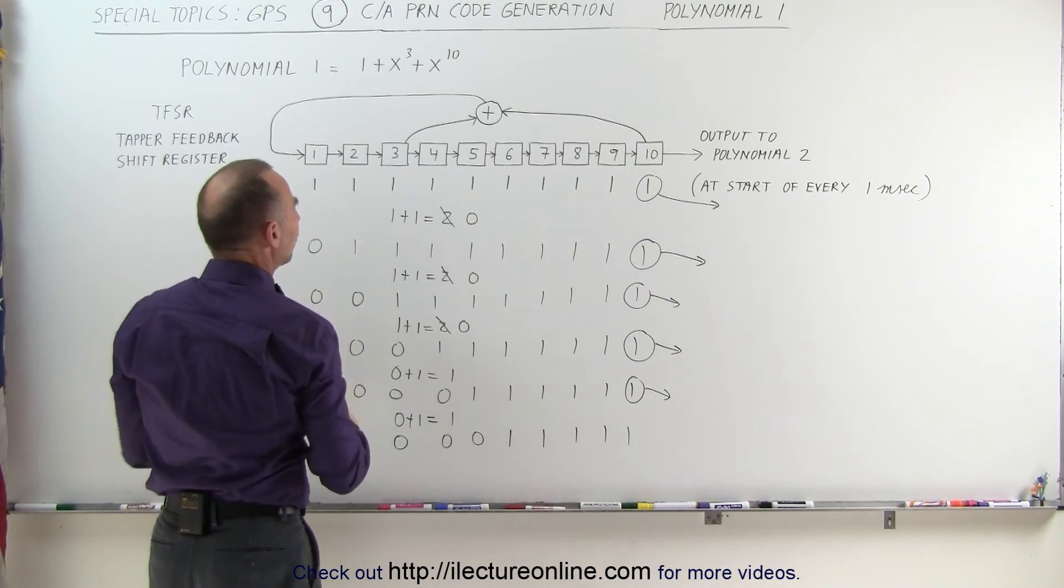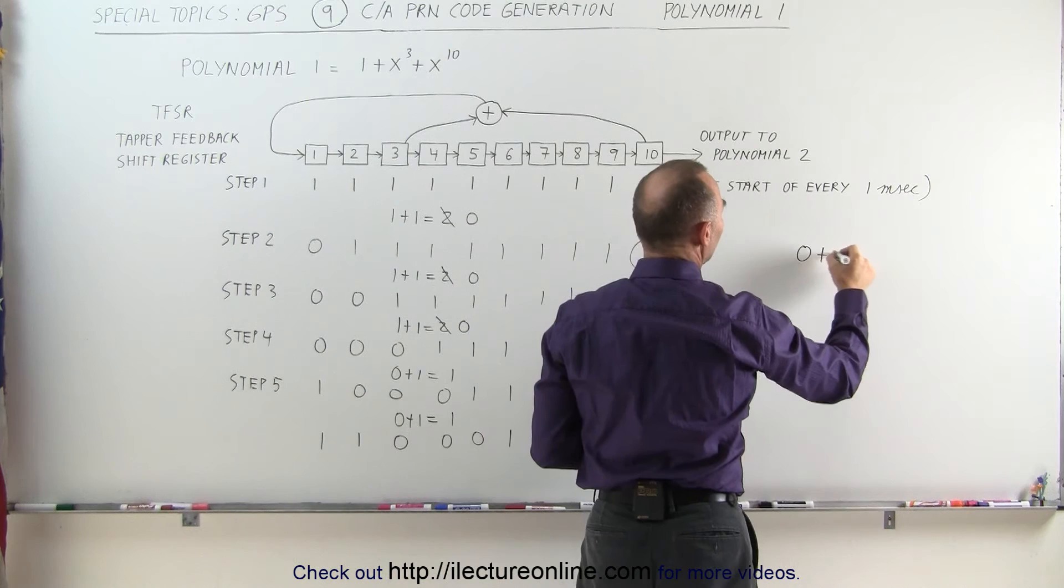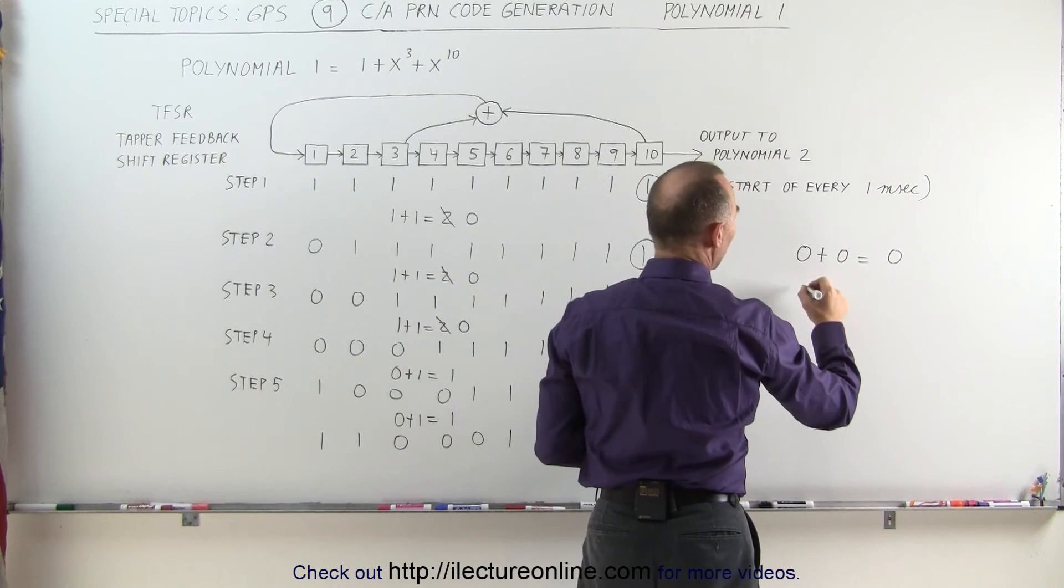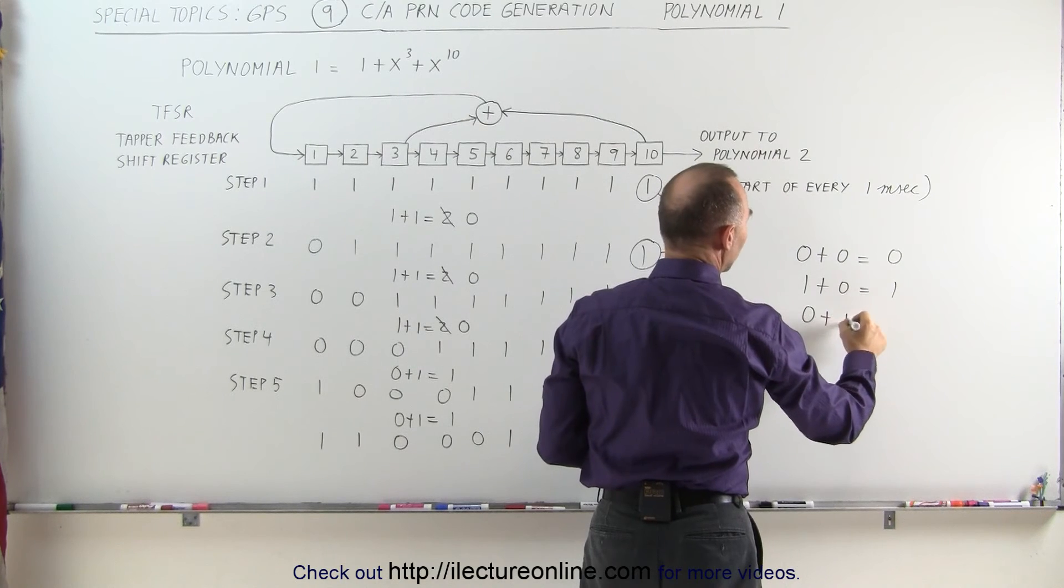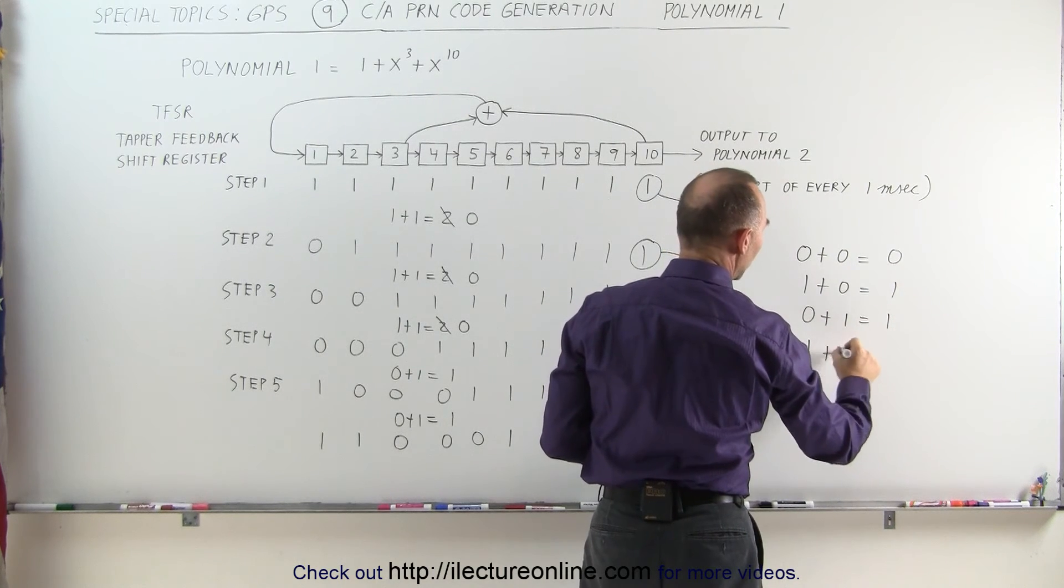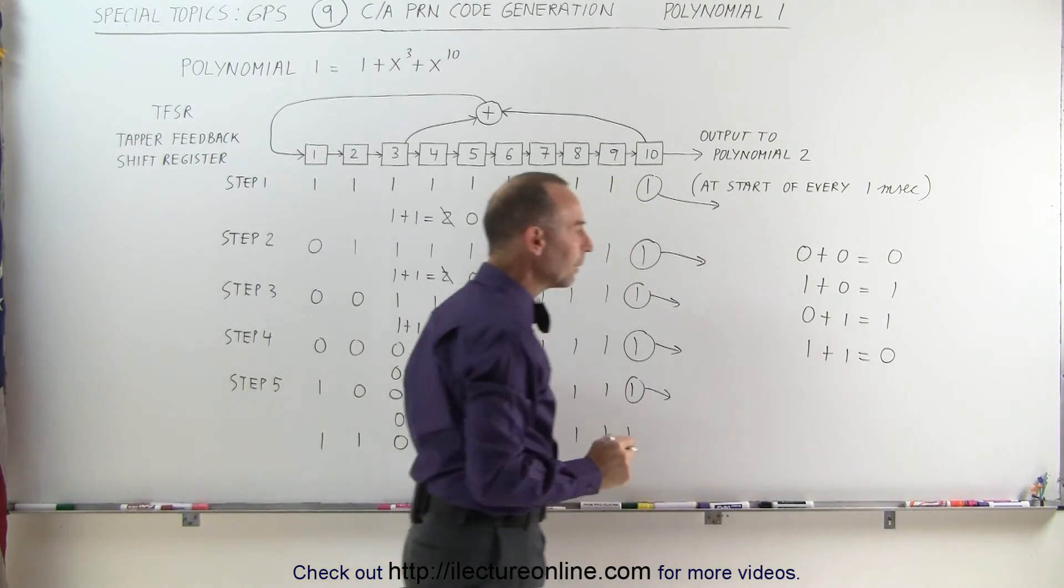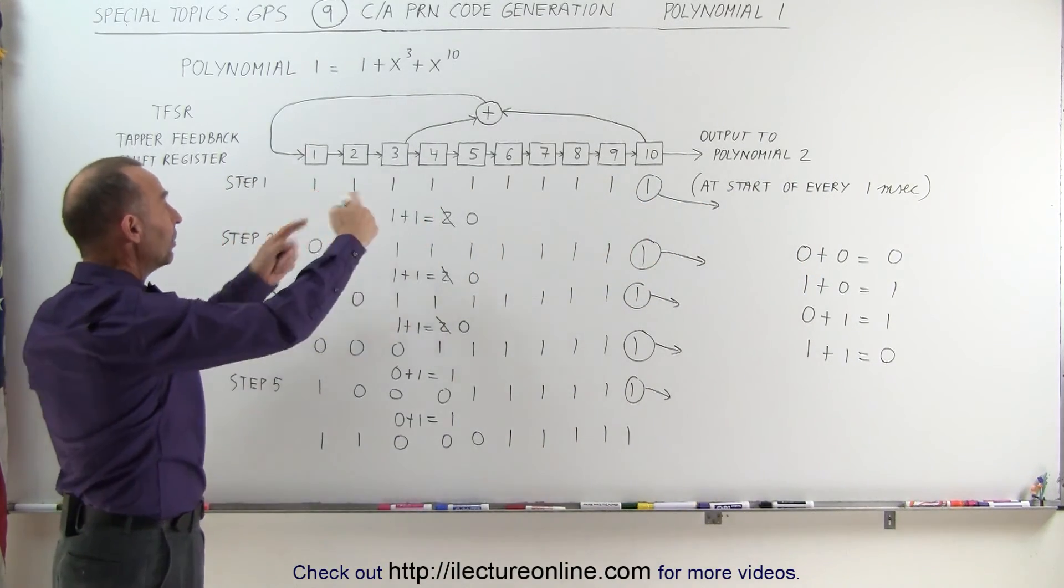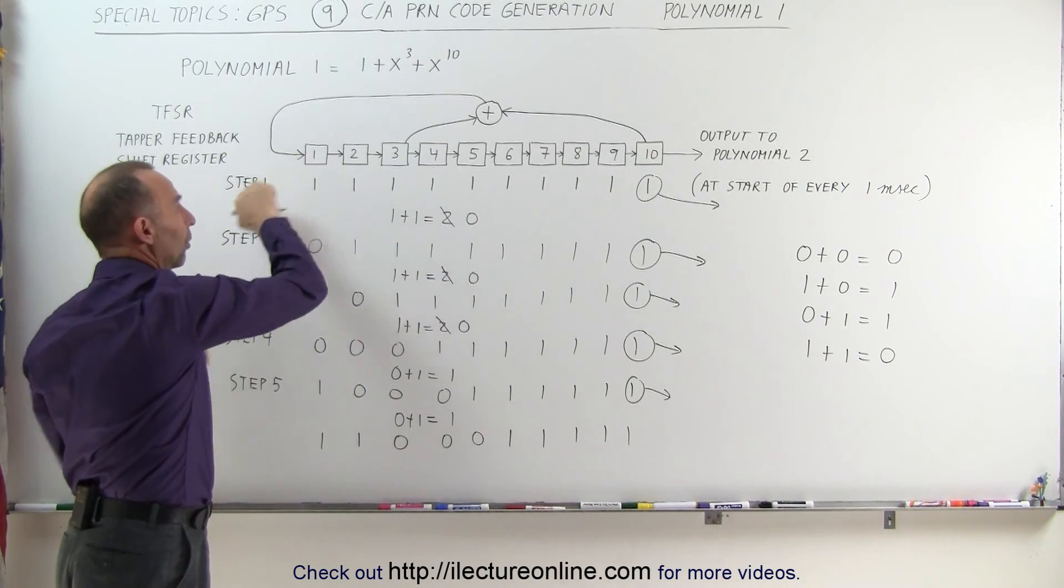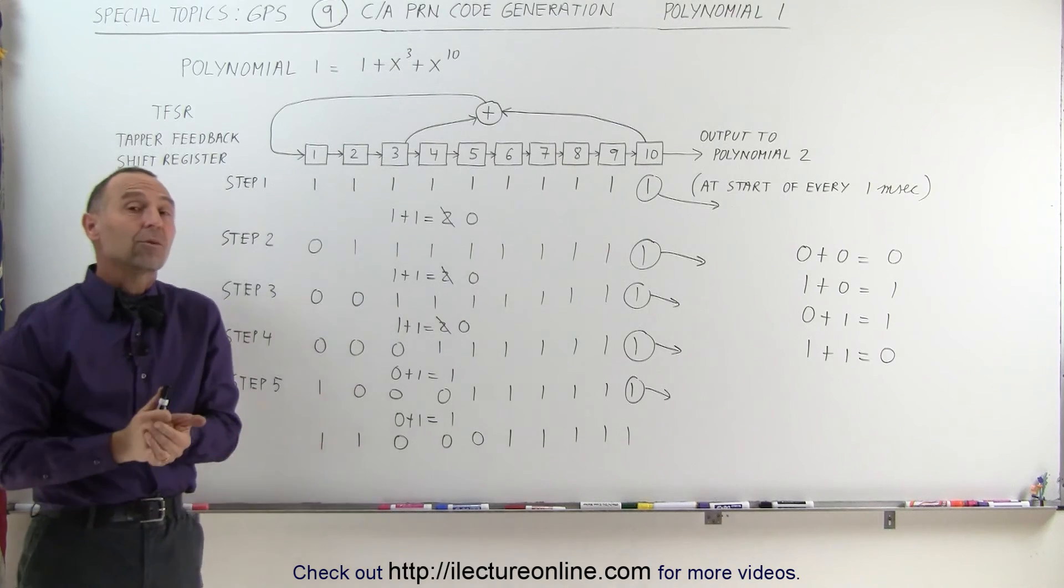Again, notice, if you have a 0 plus 0, that ends up in a 0. A 1 plus 0, that's equal to 1. A 0 plus 1, that equals 1. But if they're both 1, that comes out to be a 0. So that's the process we're following here. And that then, whenever that gets summed, whatever that result is, goes into register 1 and everything shifts over by one spot. And that gets done 1,023 times.